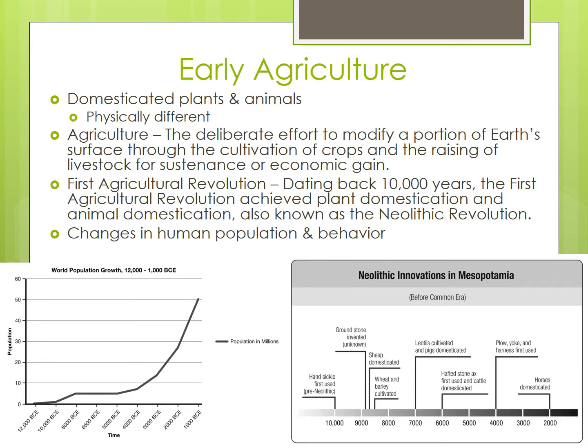Eventually, this led to plants and animals that were genetically and physically different from their wild ancestors. They were larger, better-tasting, less aggressive as far as animals, and more productive.